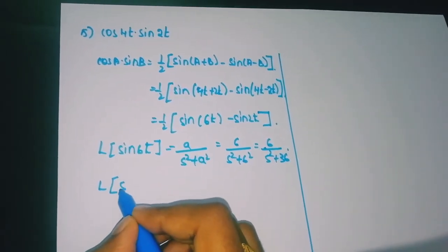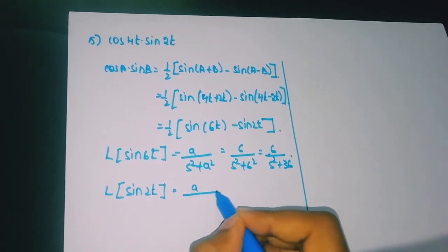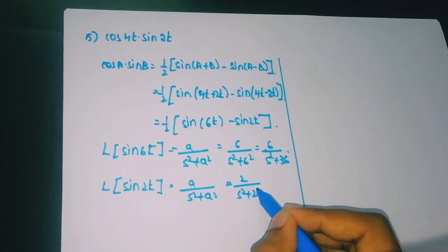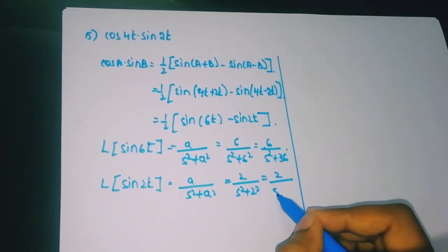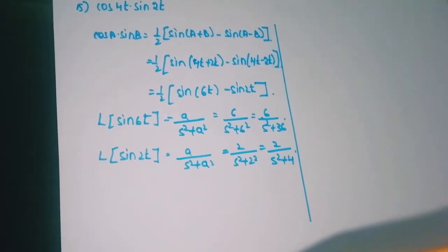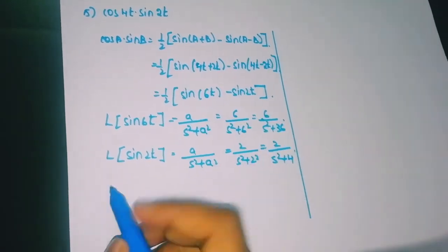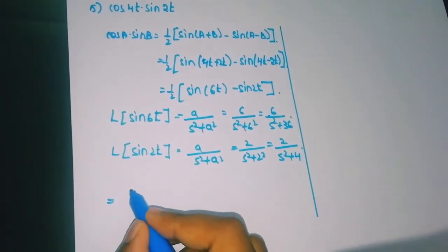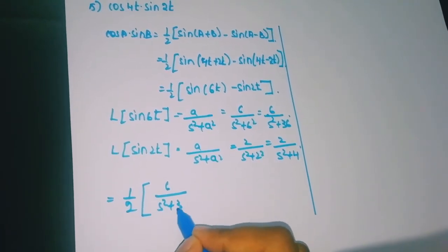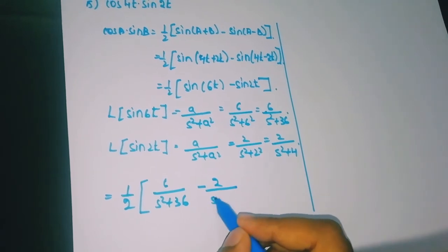Laplace of sin(2t) is 2/(s² + 4). Substituting the values: (1/2)·[6/(s² + 36) − 2/(s² + 4)].